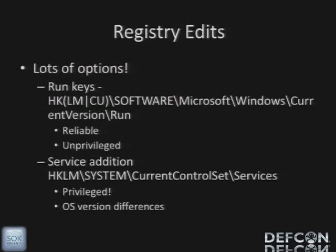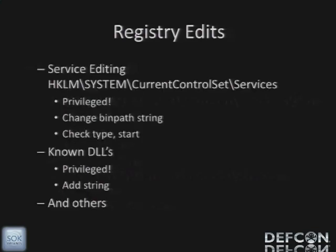You might say: I'll just put myself in the registry. There are run keys in Microsoft\Windows\CurrentVersion in HKLM or HKCU — that's reliable, your executable will get executed, but this is basically equivalent to a startup folder, running as the user. Or you could add a service: add something in CurrentControlSet\Services — now you're running privileged and guaranteed, no waiting for a login. You could also edit a service: change the bin path to a service you know is running, change the start type to make sure it runs, and your executable will be guaranteed to execute in any version of Windows and different architectures. Or you could add it to a list of known DLLs and it will also get run privileged.